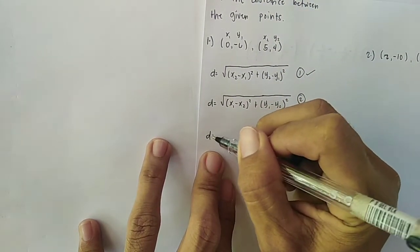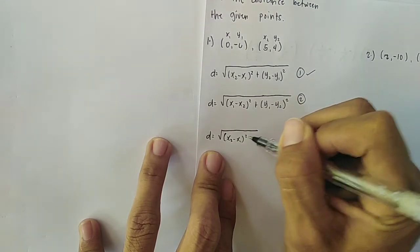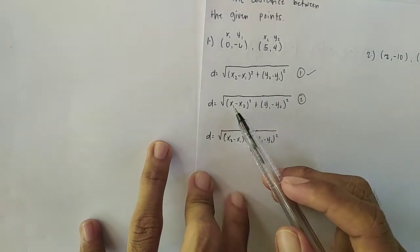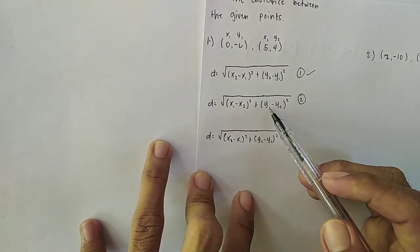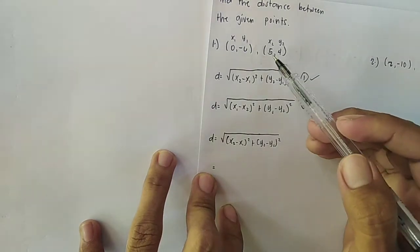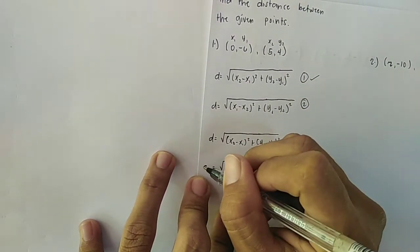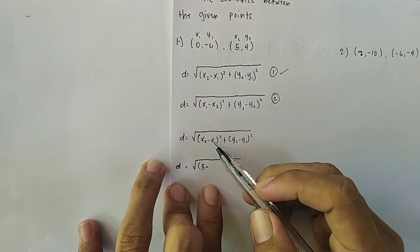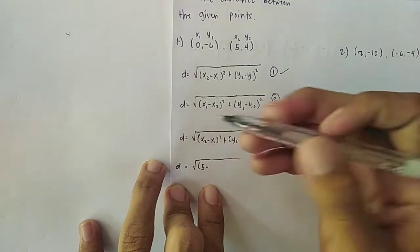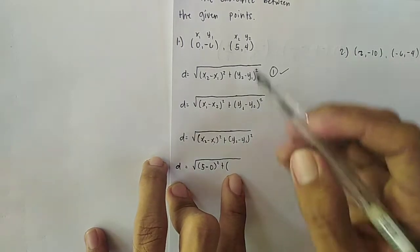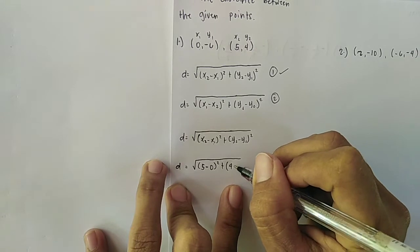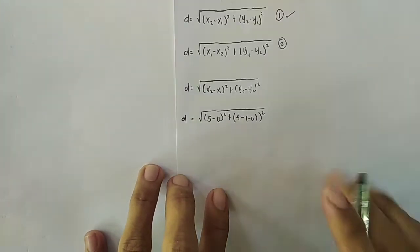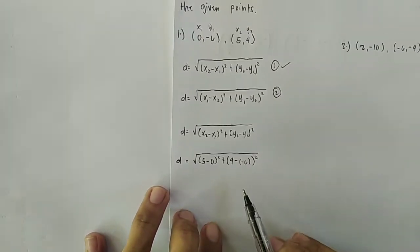Now using the distance formula, directly substitute the values. D equals the square root of (x₂ minus x₁)² plus (y₂ minus y₁)². Since x₂ = 5 and x₁ = 0, we write (5 minus 0)². Then y₂ = 4 and y₁ = -6, so we write (4 minus negative 6)². Be careful with the sign.